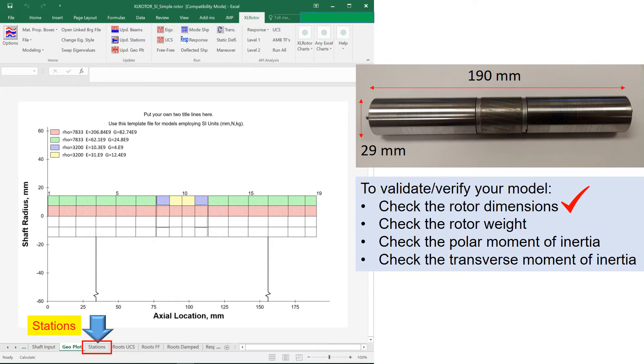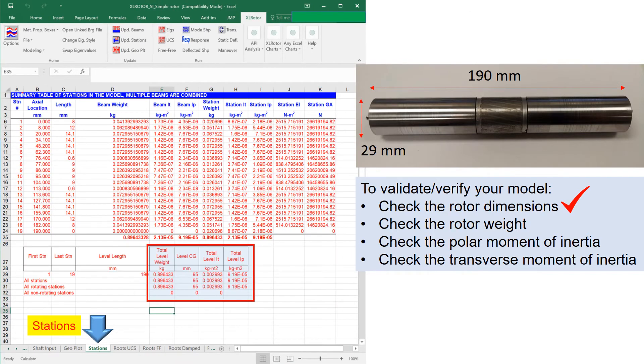The second thing you should look into is the shaft weight and the shaft moment of inertia. To check these properties, go to station sheet. The station sheet shows the output of rotor weight, polar moment of inertia, and transverse moment of inertia.